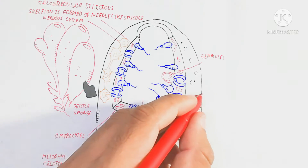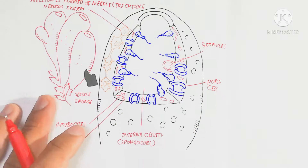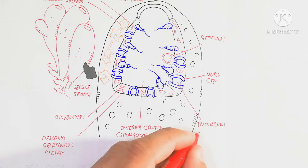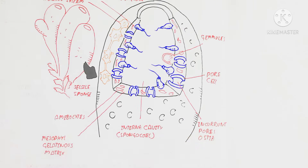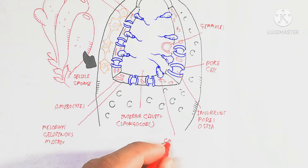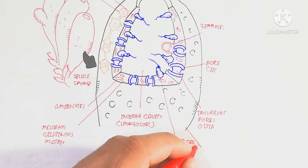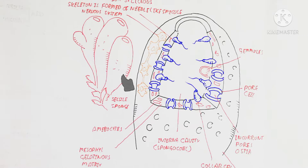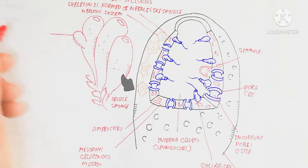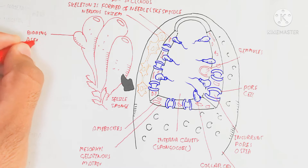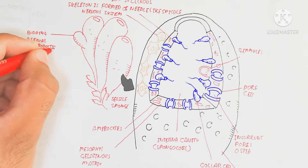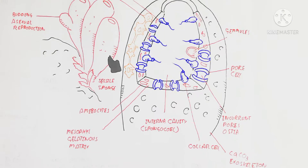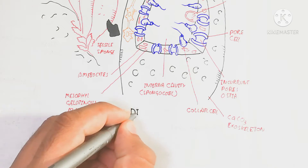The internal cavity is known as the spongocoel, which is used for the circulation of material. The gemmule is used for asexual reproduction. The pore cell controls the incoming and outgoing of water. Water exits through the osculum present in the upper part of the sponge. The incurrent pores called ostia allow water and food-containing water to move inside. Budding is a character of asexual reproduction.